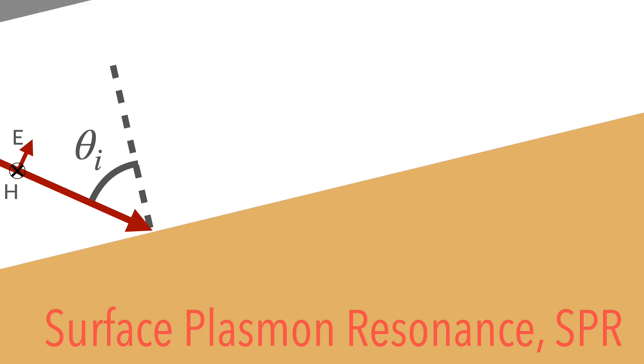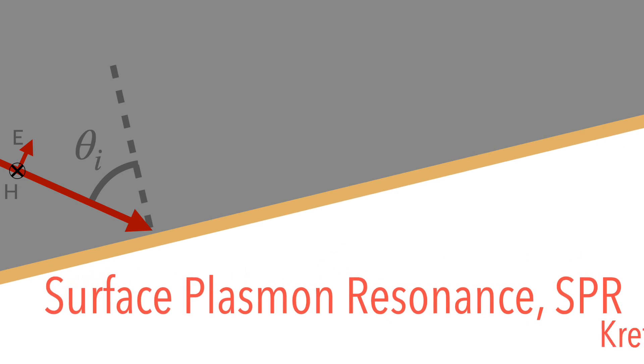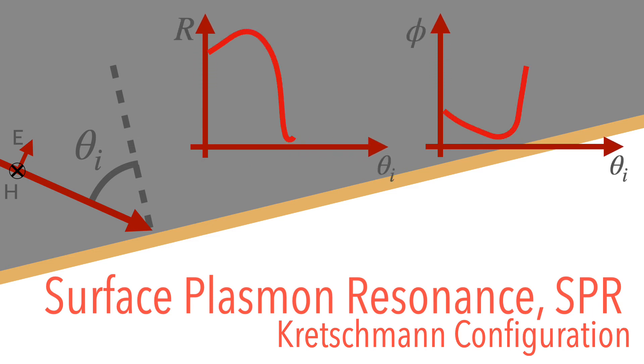The Kretschmann configuration can be used to excite surface plasmons. Surface plasmon resonance manifests itself as a dip in the reflectivity spectrum and a sharp phase change at the SPR angle.